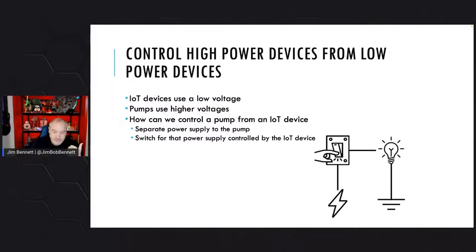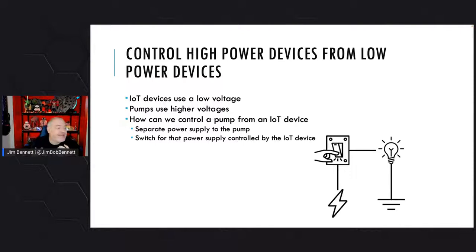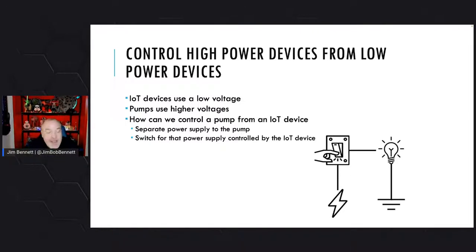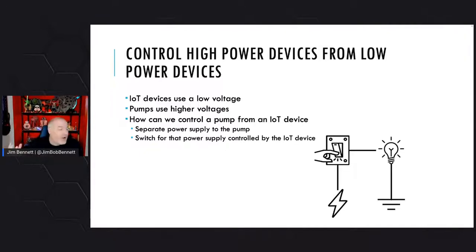I don't want to plug in my pump and burn the Pi out — that means it won't work, and Raspberry Pis are expensive and hard to get right now. So how can we use a low-powered device like an IoT device to control a more high-powered device? That's what we'll be looking at. Think about a light switch: I use a small amount of mechanical energy to press a light switch, and that turns on 120 volts that goes to the light. I don't physically provide 120 volts — I just provide the mechanical energy to flip the switch.